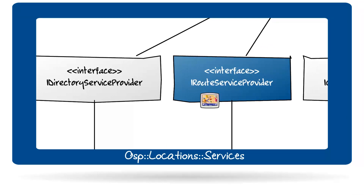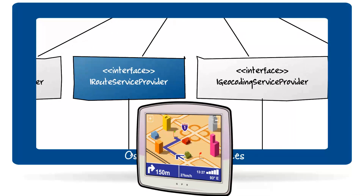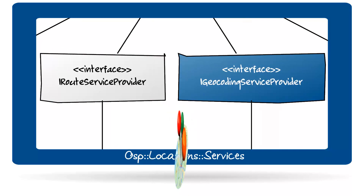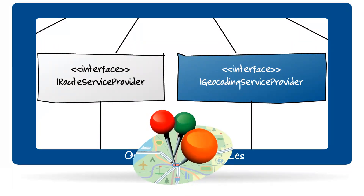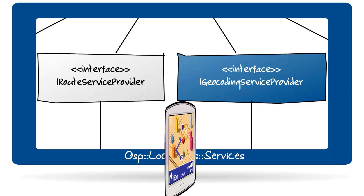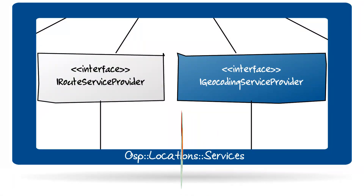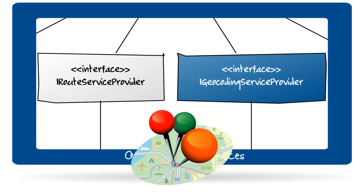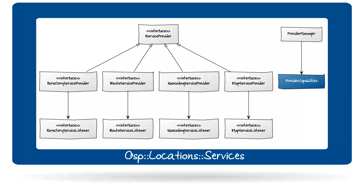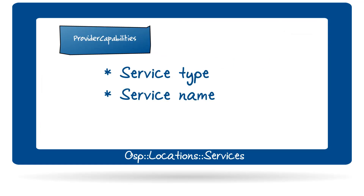Through the IRouteServiceProvider interface, applications can request routing services. Another useful interface is IGeoCodingServiceProvider, which gives access to geocoding services. With this interface your application can request geocoding and reverse geocoding — meaning a service provider converts street addresses into coordinates or vice versa. The ProviderCapabilities class holds the type, name, and additional information about the capabilities of the service provider, allowing your application to decide which provider to use.